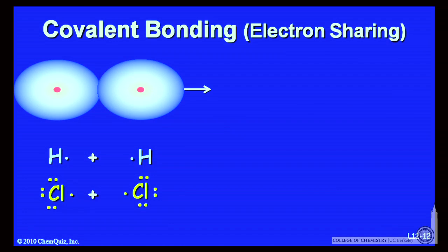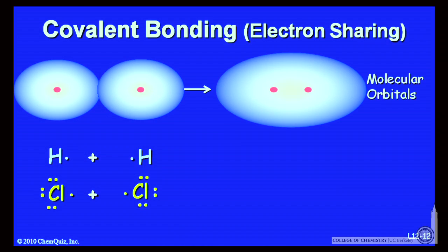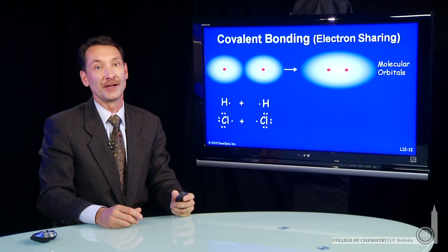Covalent bonding involves sharing electrons in molecular orbitals to form a bond between two elements.